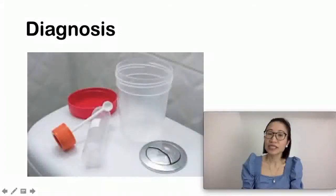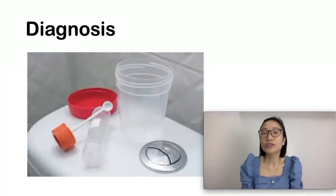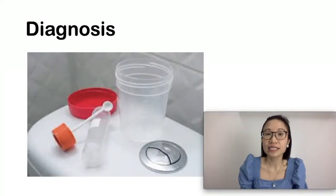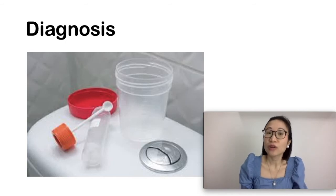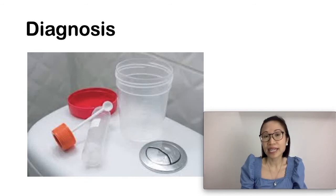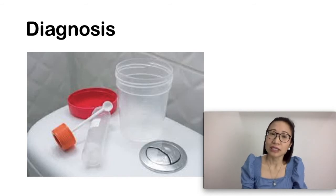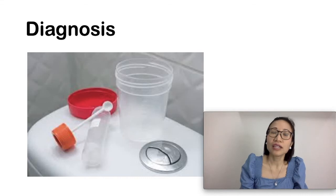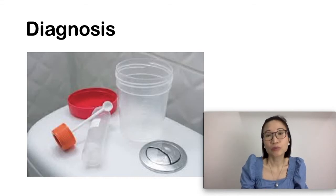How is this infection diagnosed? When you go to your doctor, your doctor would ask for your signs and symptoms and would do a physical examination. Your doctor would also request for your stool sample to be sent to the laboratory. Entamoeba histolytica is difficult to diagnose in stool samples, so it is possible that you might have to submit several stool samples taken from different days.